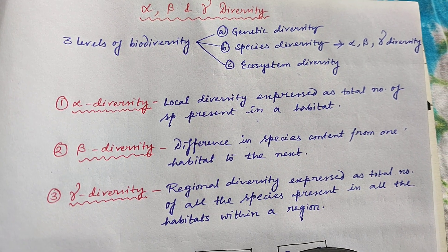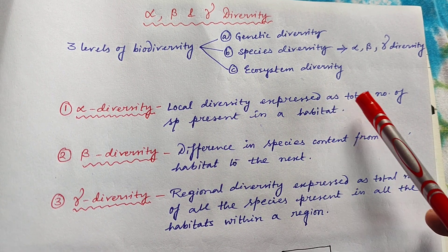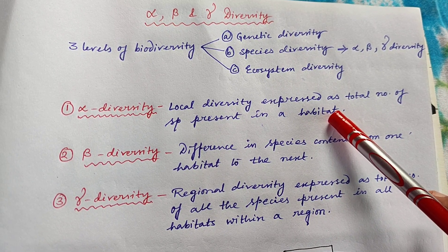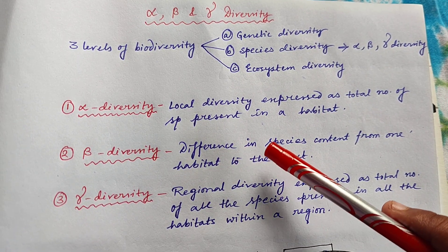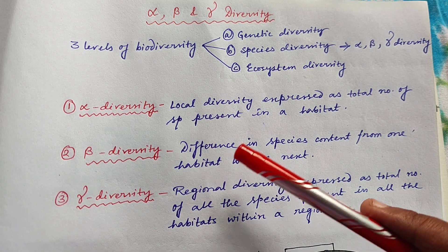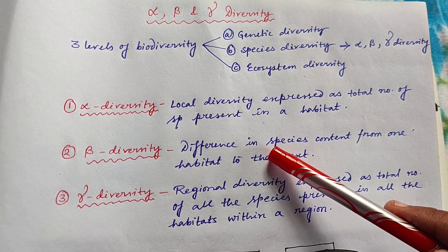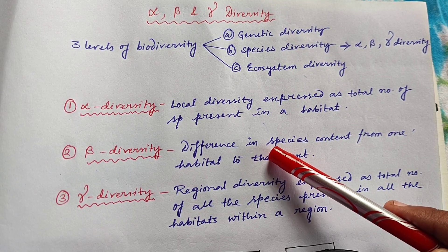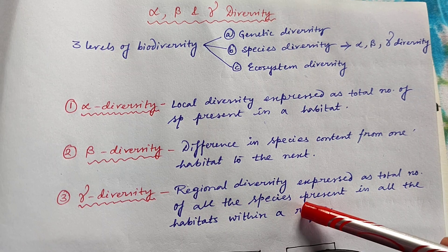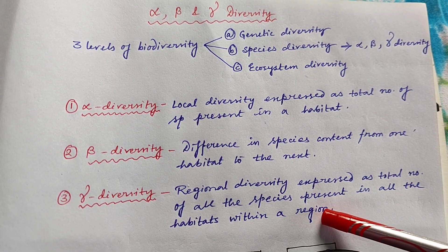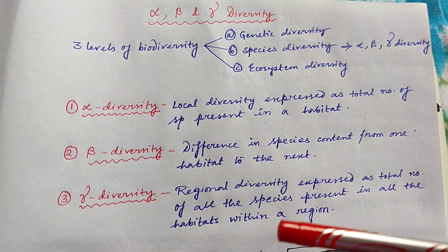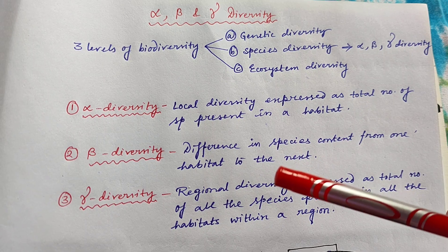Alpha diversity is a local diversity which is expressed as the total number of species present in a habitat — that means it is similar to species richness. Beta diversity refers to the difference in species content from one habitat to another — it is a type of comparison between species content of two different habitats. Gamma diversity is a regional diversity expressed as the total number of all species present in all the habitats within a region.